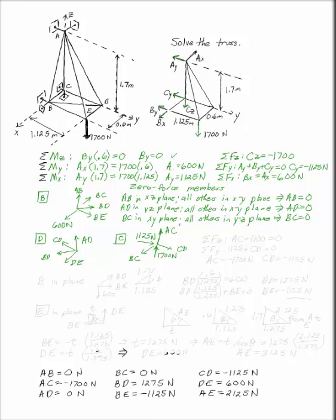At this point, we want to actually start solving things. So if I start here with my joint at C that I've already got written down, I can say the sum of the forces in Z, what's going up and down, AC plus 1700 has to be equal to zero. So AC is minus 1700 newtons. And the sum of the forces in Y gives me 1125 plus CD equals zero. So CD is minus 1125 newtons. We've got five of the nine members.